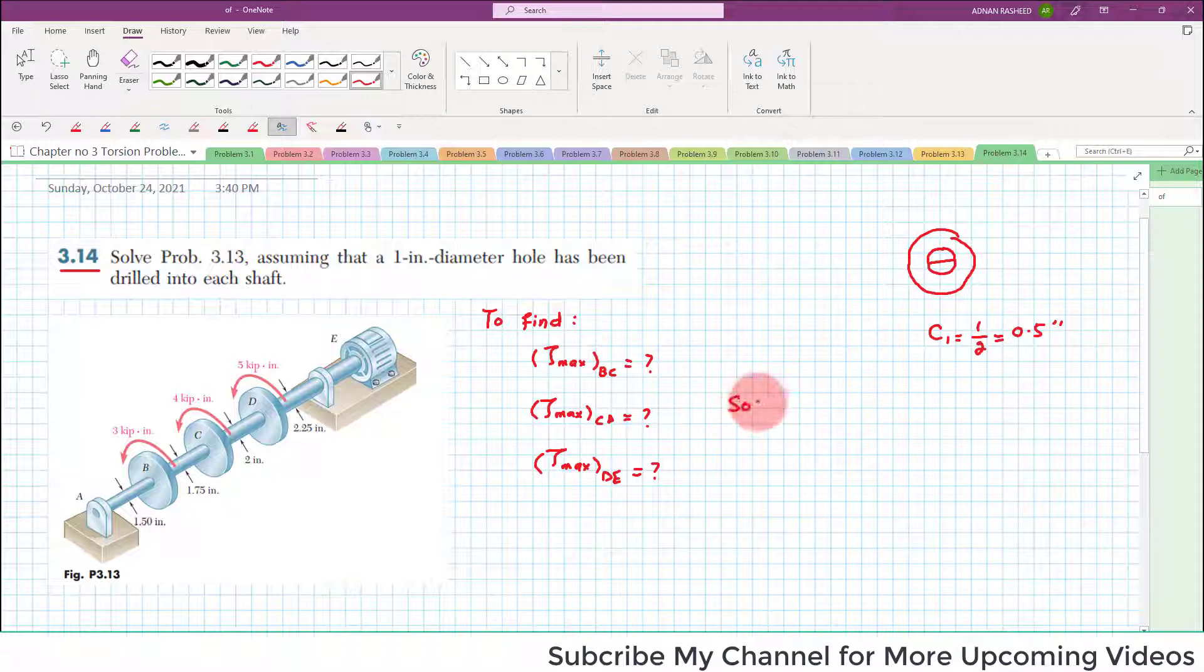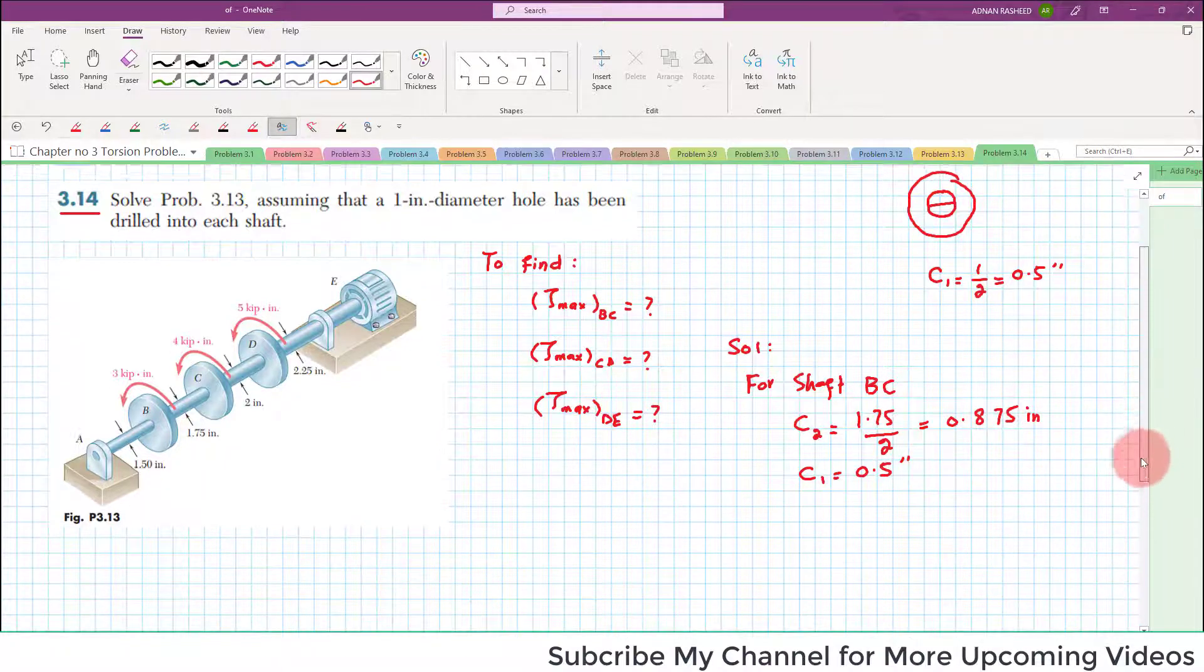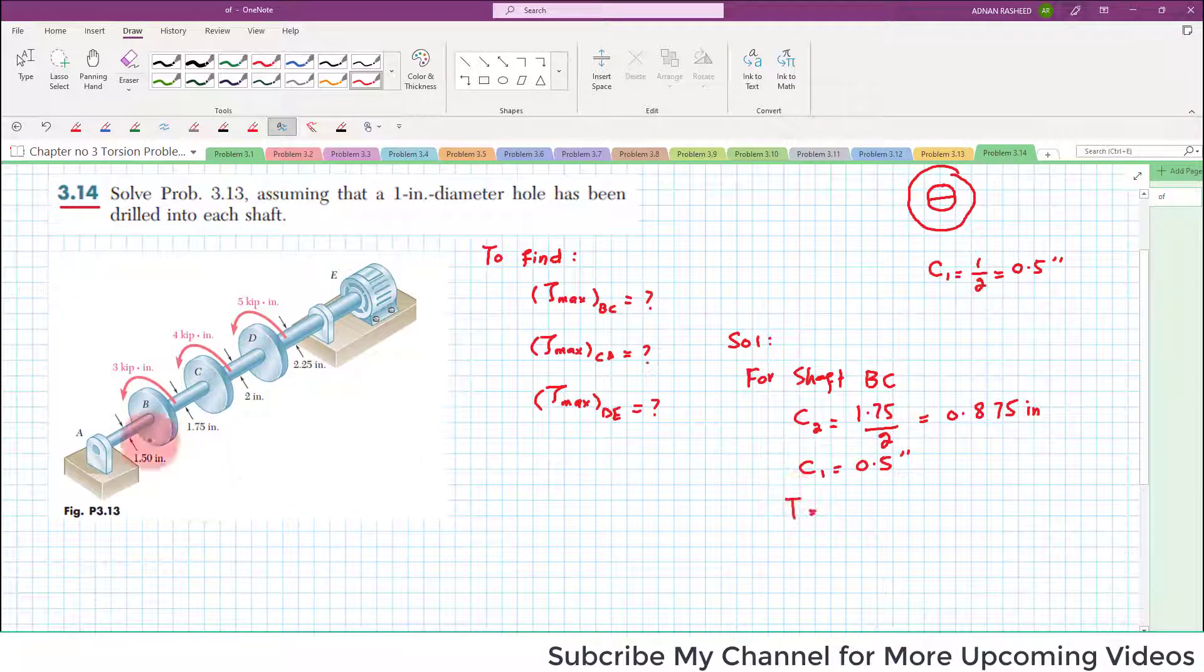So let's start with its solution. So for shaft BC, we can have C2 which is outer radius is equal to 1.75 divided by 2 and C1 will be equal to 0.5 inch. And 1.75 divided by 2 is 0.875 inch. The torque is given as for BC is 3 kips into inch.